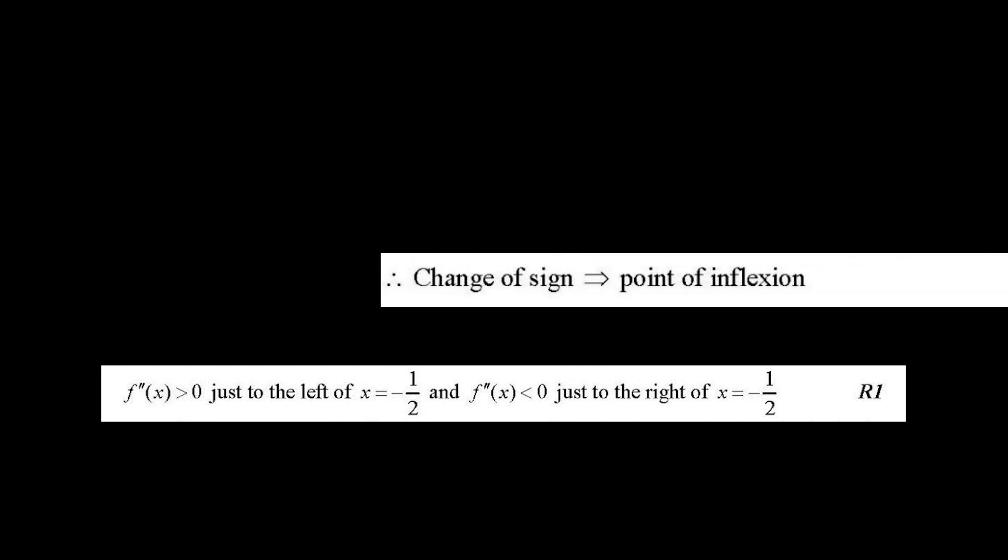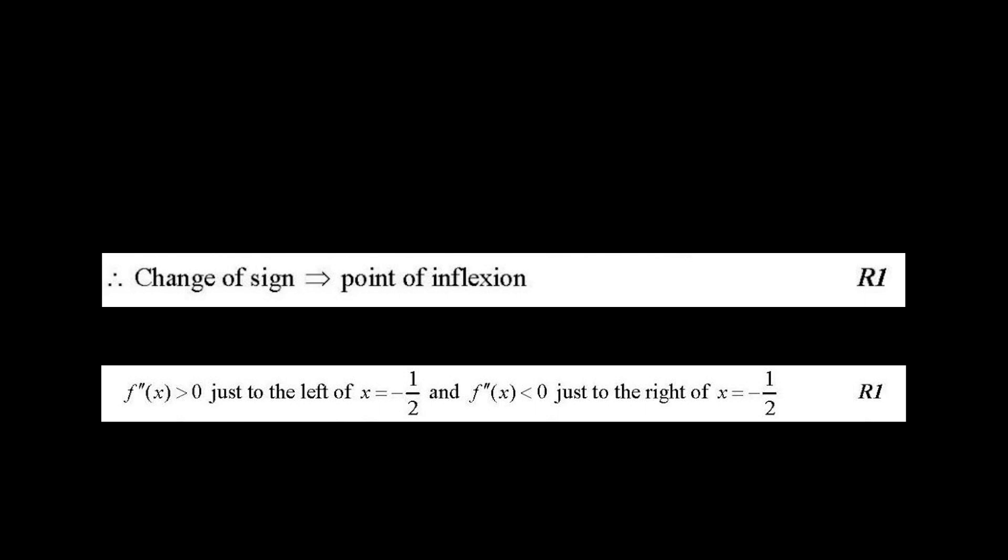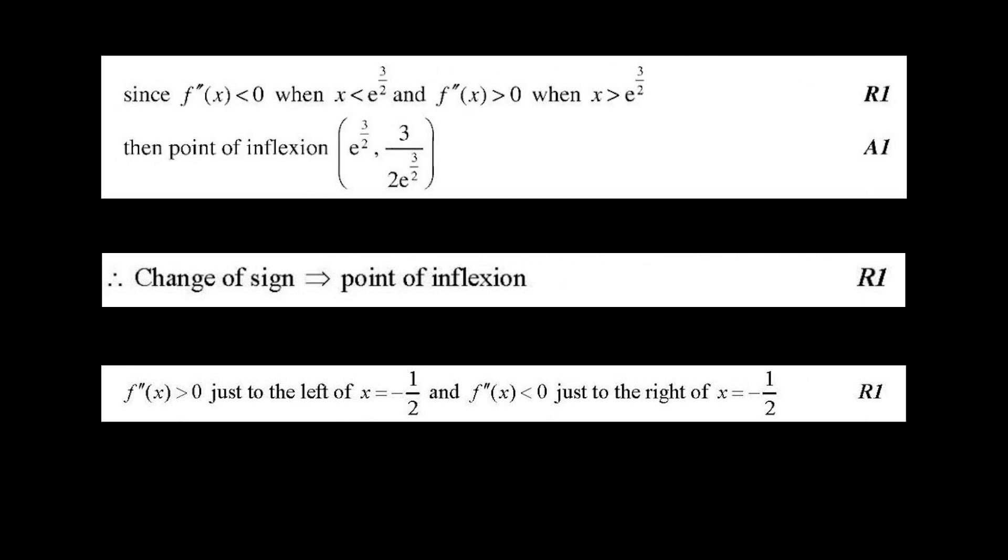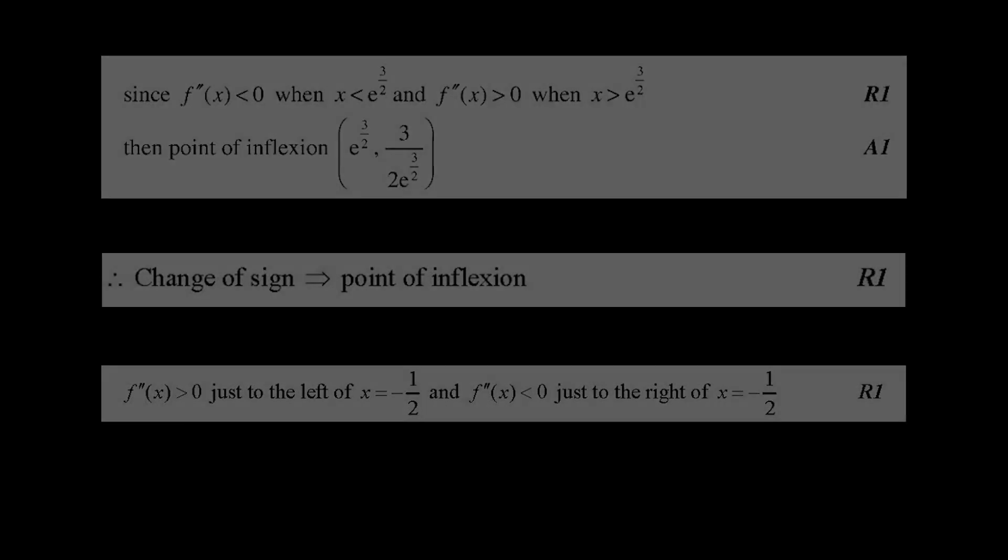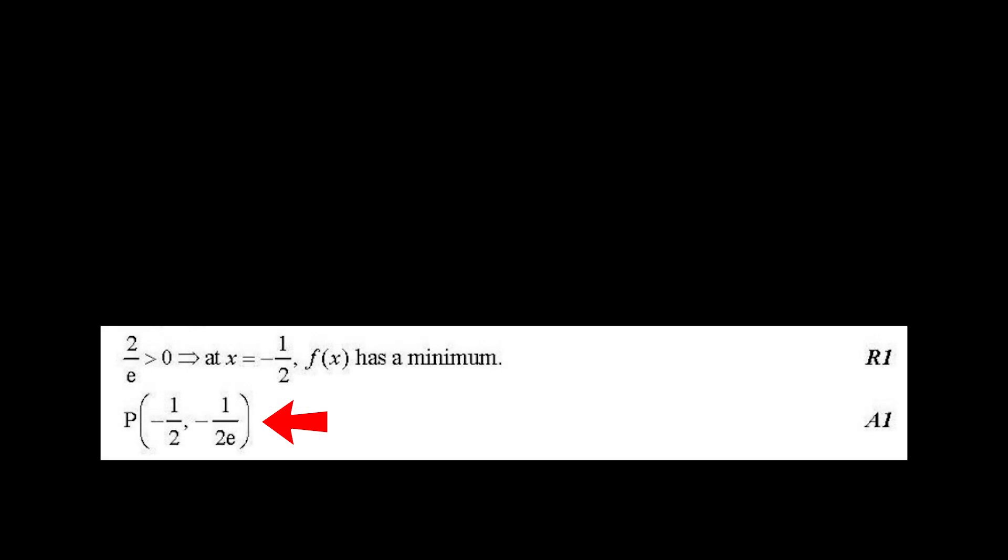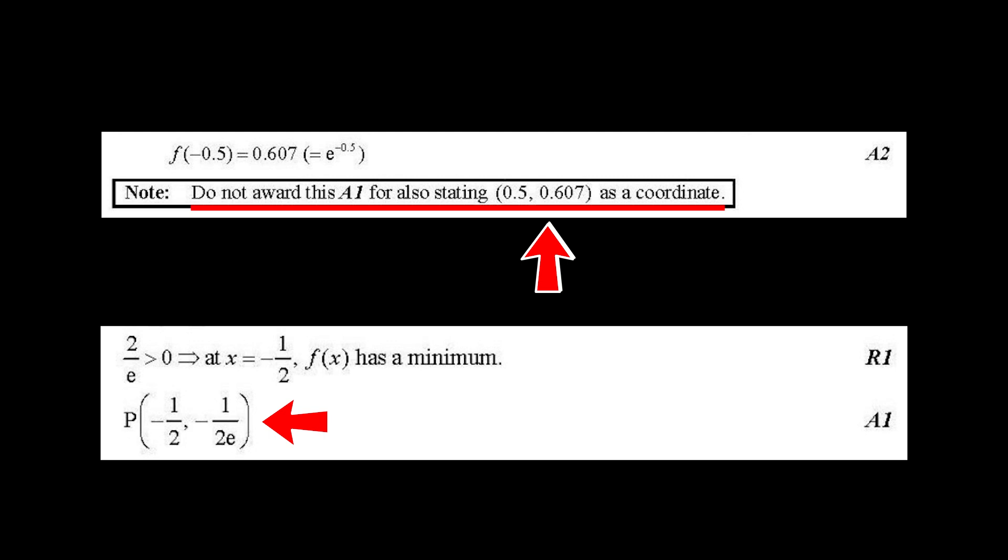9. Differentiation. When solving problems that require finding the point of inflection, you must locate the value where the second derivative of f becomes 0 and check for a sign change in the second derivative before and after that value. Simply finding the value where second derivative of f becomes 0 will not earn full marks. It is important to read the problem carefully and determine whether you need to find the x value where the maximum minimum occurs, the maximum minimum value itself, or the coordinates of the maximum minimum. Your answer should be tailored to the problem's requirements.